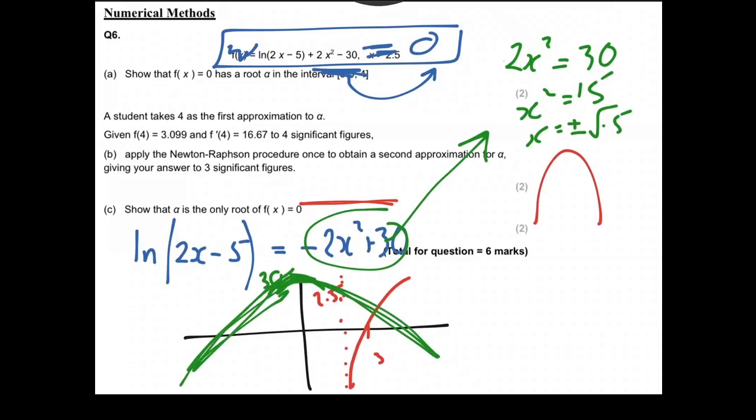But you can see it only crosses once, so we can say only meets once. So there's one mark for the sketch and one mark for the explanation. Okay, what's next? Oh, that's that one done. Cool.